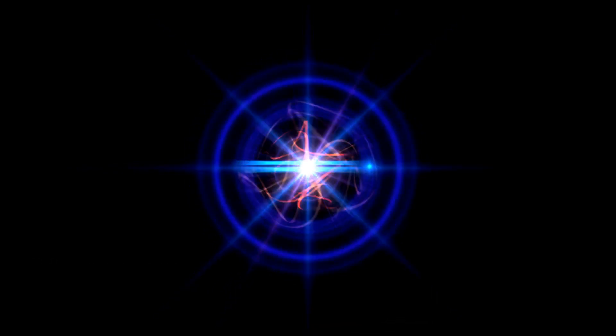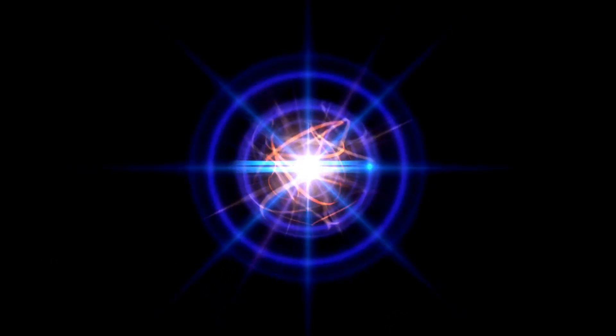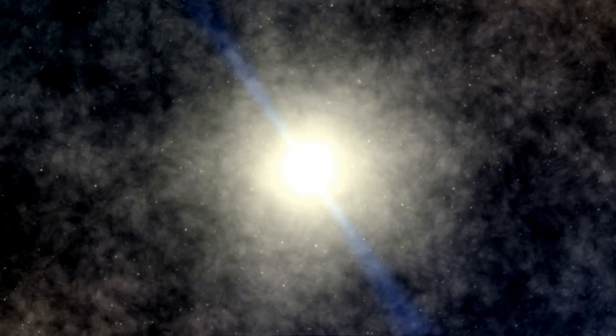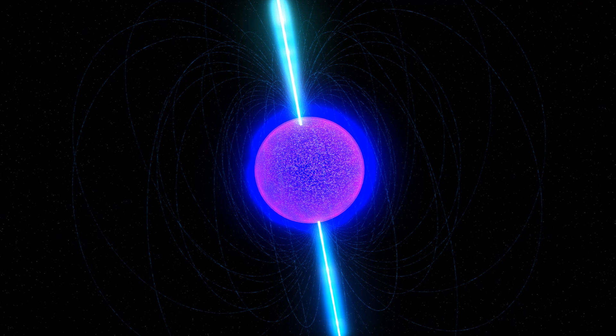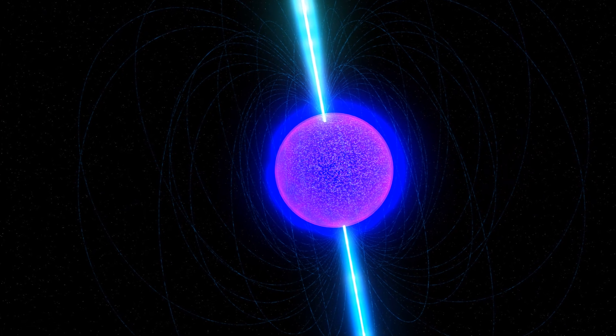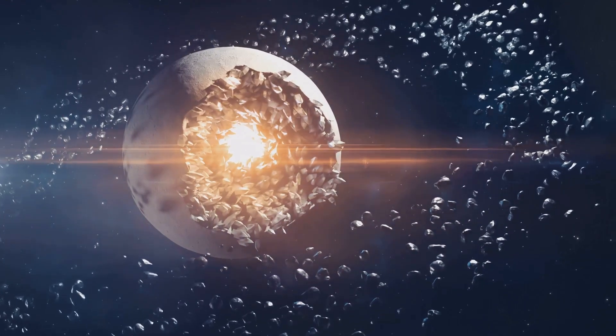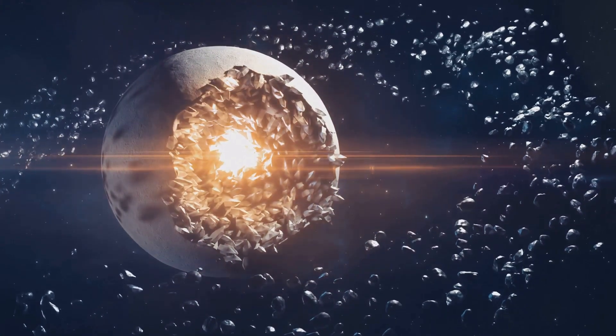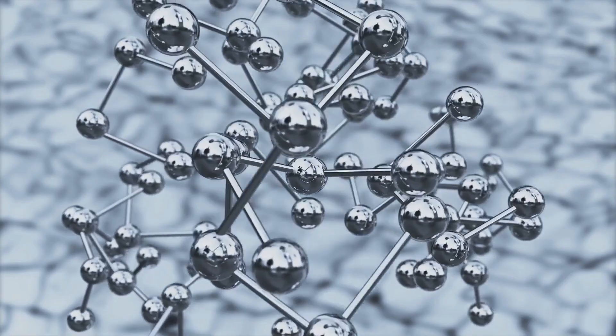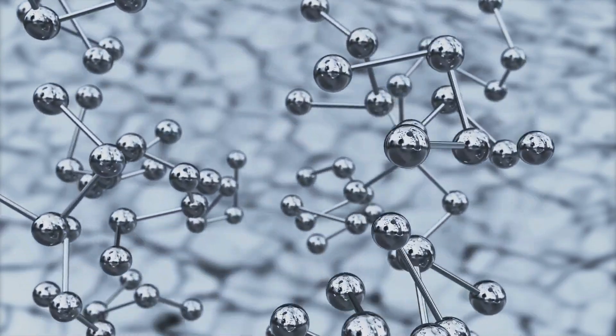Number 16, magnetars, the ultimate death rays. Magnetars, neutron stars with insanely powerful magnetic fields, are the universe's ultimate weapon. Their magnetic fields are so strong that they can distort the very fabric of space-time. Imagine your body being ripped apart at the atomic level by an invisible force, your very atoms rearranged by a magnetic field trillions of times stronger than Earth's.